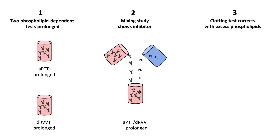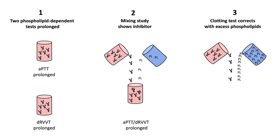Next, you check that the clotting test corrects with excess phospholipids. The excess phospholipids take up all the antibody binding sites. Clotting proceeds as usual and the DRVVT corrects. If the confirmatory DRVVT is negative, other more sensitive confirmatory tests can be performed.